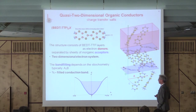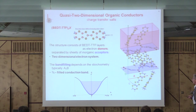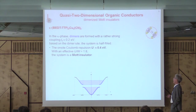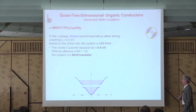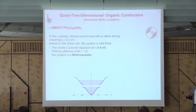Usually it comes as an A₂B stoichiometry, except for one compound we just heard about. From the stoichiometry you expect a three-quarter electron-filled system, or a one-quarter hole-filled system. However, many of these come as dimerized compounds where two molecules are close together with rather strong coupling. You consider one of these dimers as the primary unit, and accordingly you basically have a half-filled system — that's why the Mott physics becomes interesting in these compounds.